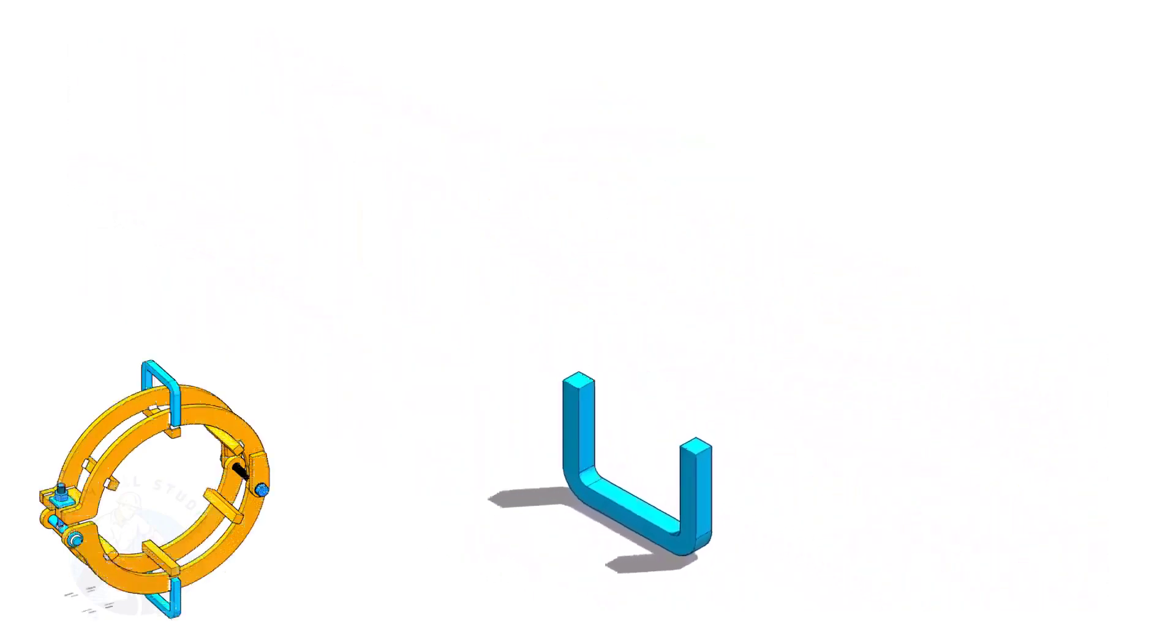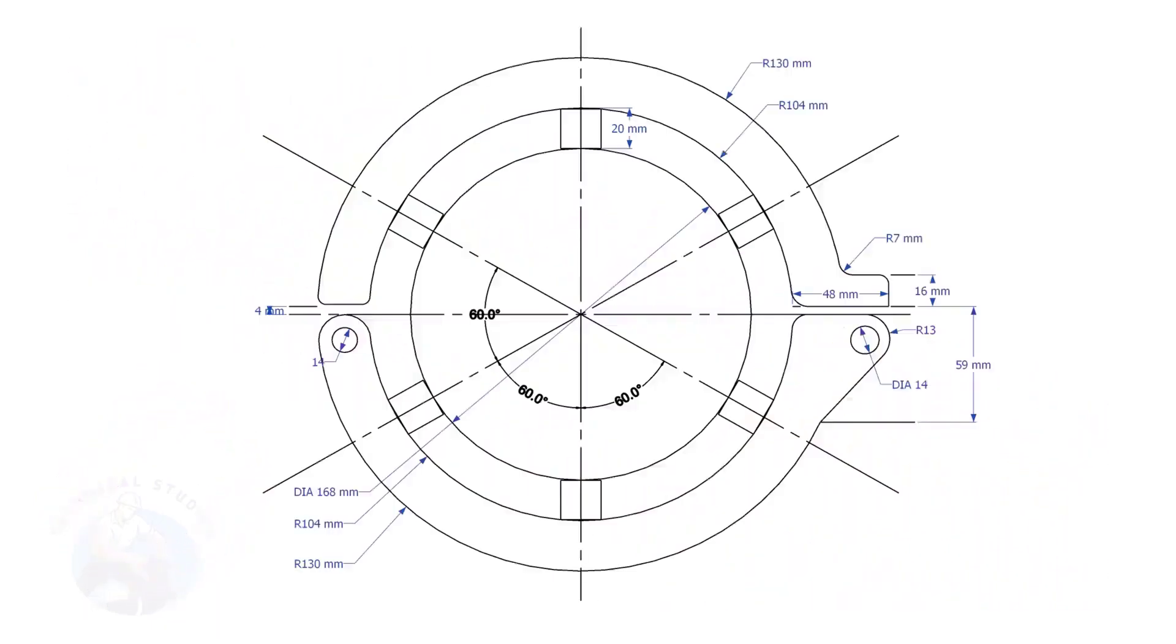Let us make the different parts of the pipe clamp. This is the main part of the clamp. I will explain to you how to layout this.